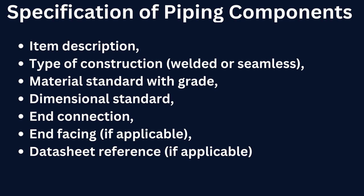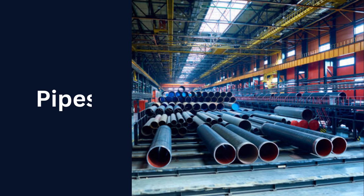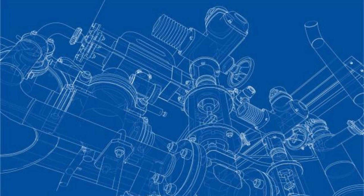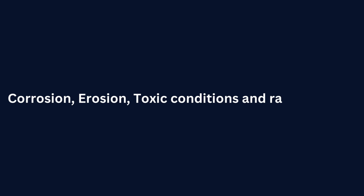Now let's discuss the pipe. A pipe is a tubular item made of metal, plastic, glass, etc., meant for conveying liquid, gas, or anything that flows. Piping systems in a chemical plant are comparable to the veins and arteries through which fluids, vapors, slurries, solids, etc., flow under various conditions as imposed by the process design of the plant. Piping design becomes more complex due to corrosion, erosion, toxic conditions, and radioactivity. It is a very important component for any industrial plant, and its engineering plays a major part in the overall engineering of a plant.